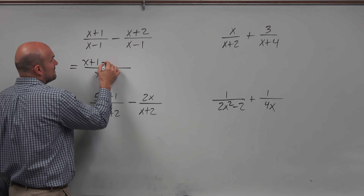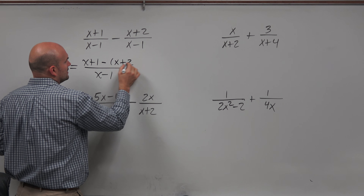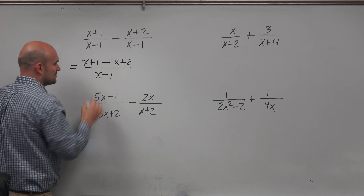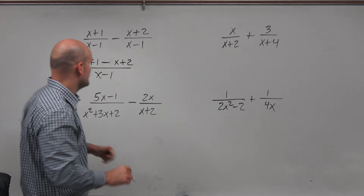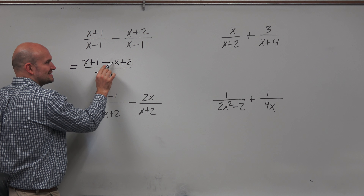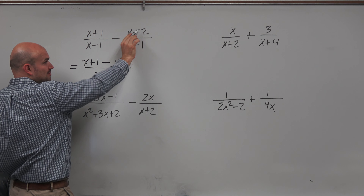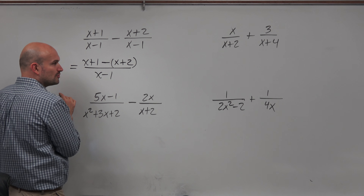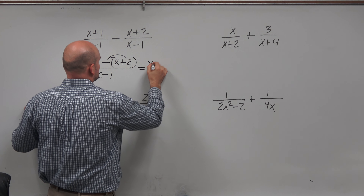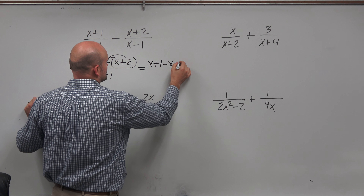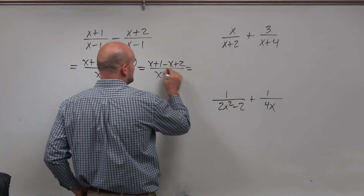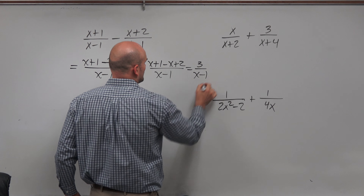I can write x plus 1 minus (x plus 2). Notice I automatically wrote the parentheses — a lot of students forget to do that. Without parentheses, you're only subtracting x, but we need to subtract the whole expression x plus 2. Applying the parentheses gives us (x plus 1) minus (x plus 2), all over x minus 1, which simplifies to 3 over x minus 1.